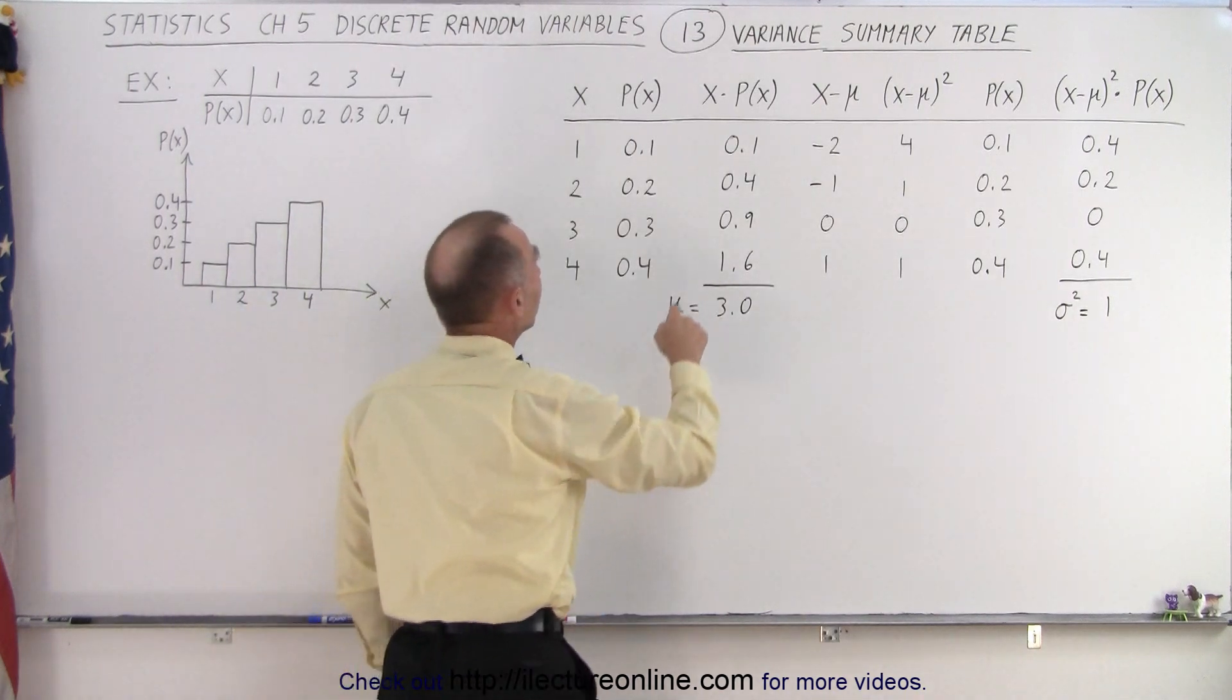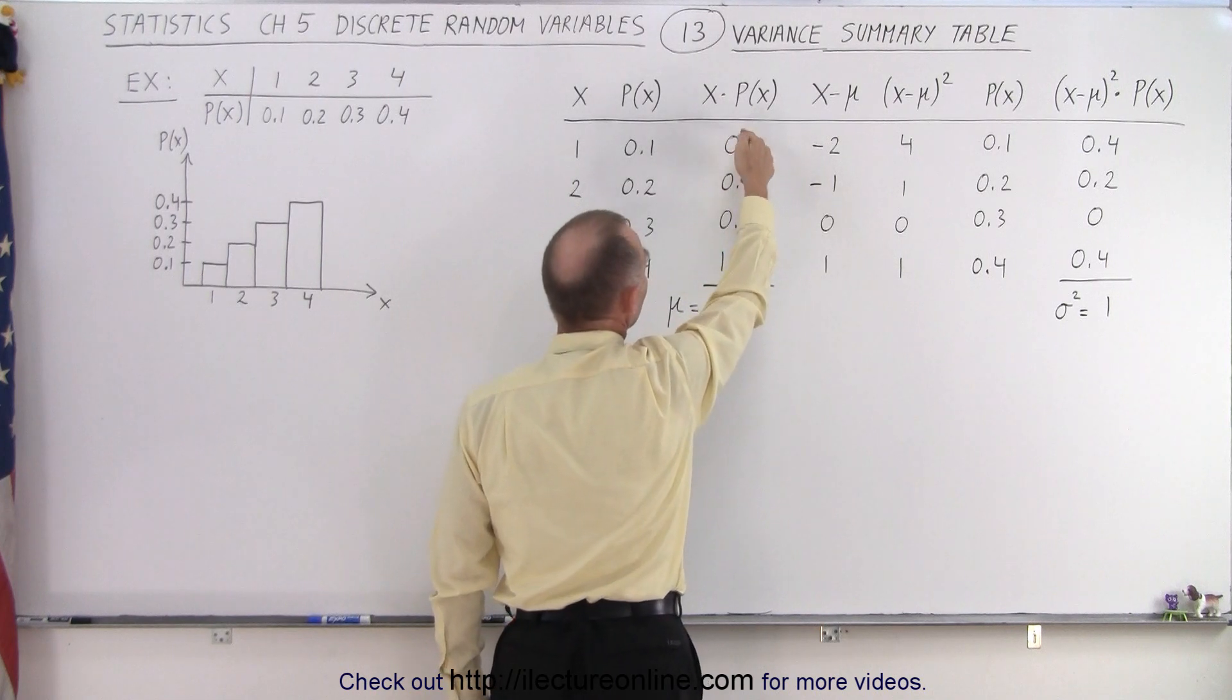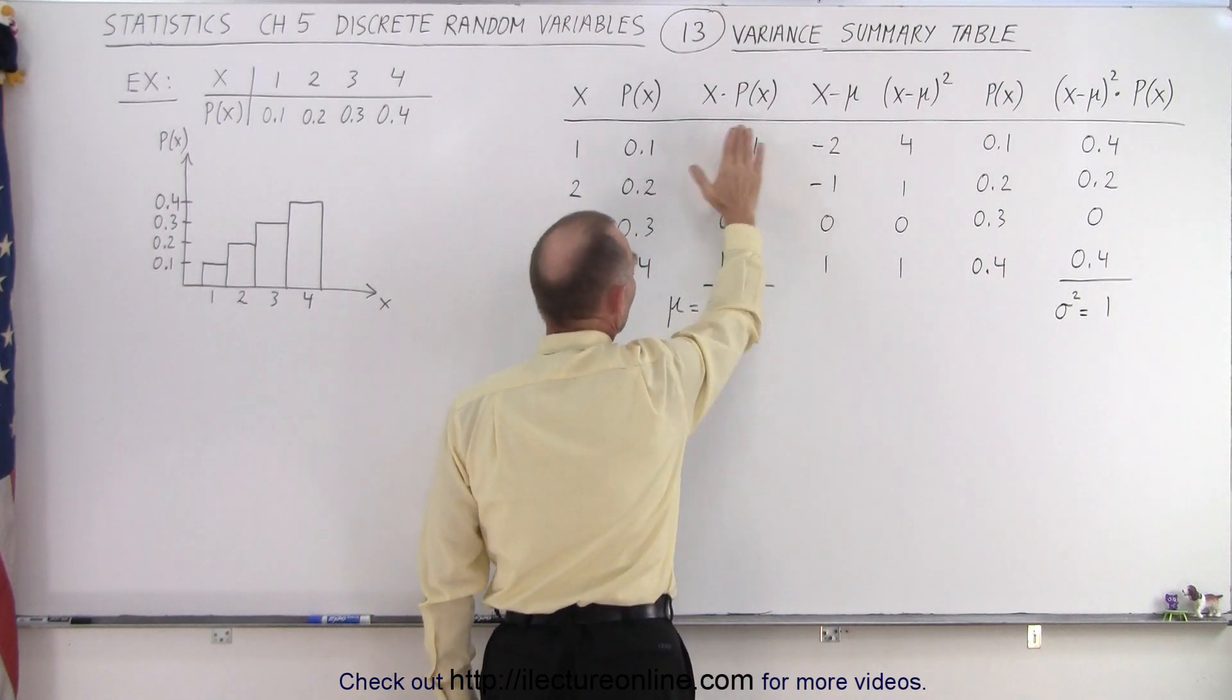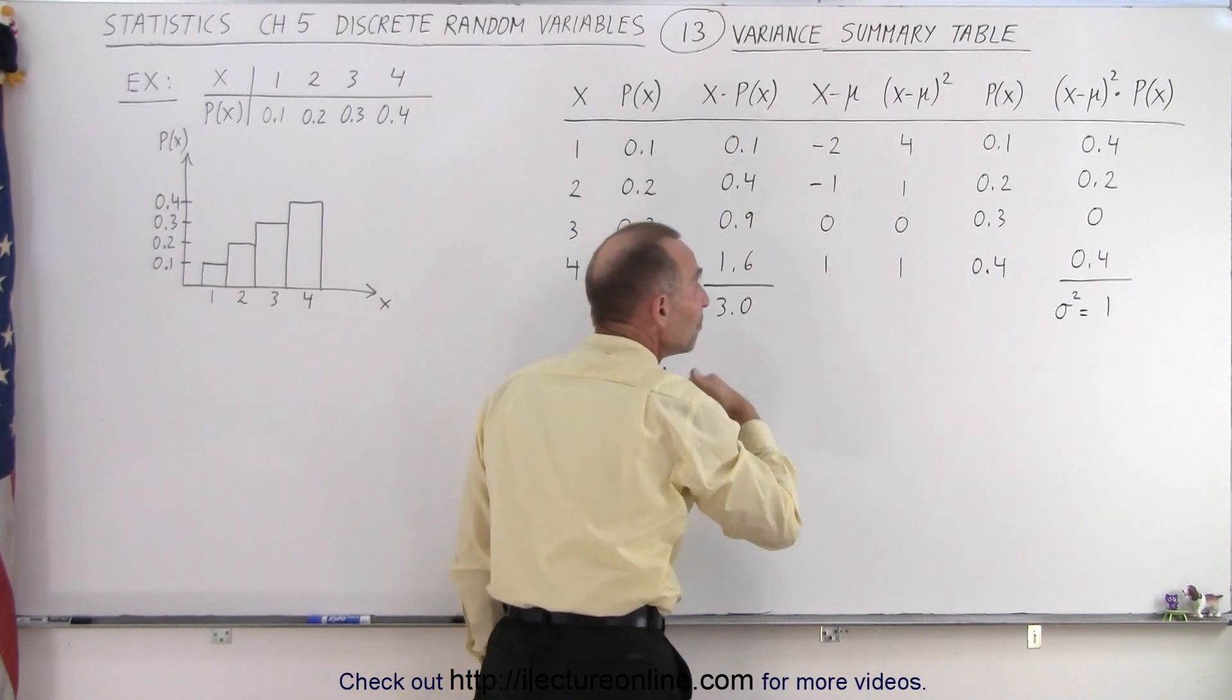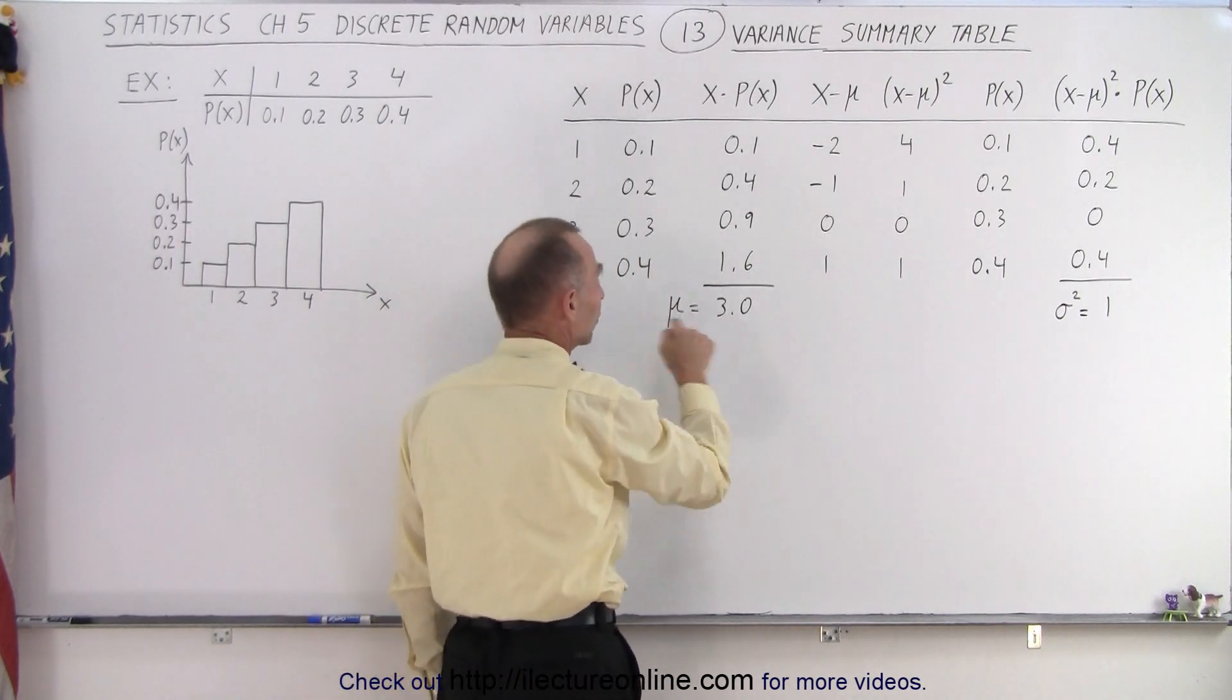Now we multiply the values that x can have times its corresponding probability. And this is what we have. And when we add it all together, we get what we call the mean of the probability distribution, which we calculated before to be 3.